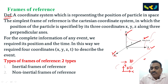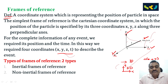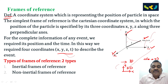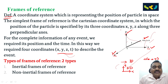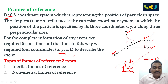In this system, the position of a point is described by coordinates x, y, z. At any instant of time t, we use x, y, z, and t. For the complete information of any event, we require its position and time, so we need four coordinates: x, y, z, and t, to describe the event.